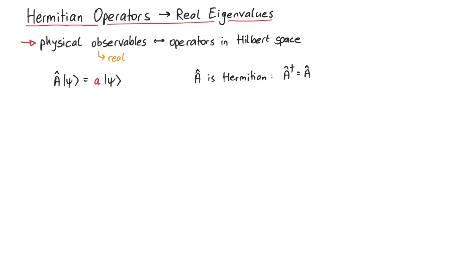If a quantum system is prepared to be in the state psi and we perform a measurement of some quantity represented by a, then this corresponds to the expectation value of a, written as psi a psi. The question is now, how can we show that the eigenvalue a must be a real number?